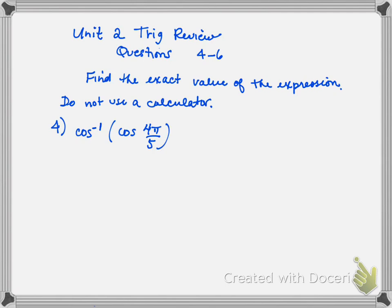You have to check these out and know what the ranges are of the inverse functions. Before I even start, I have to know what the range of inverse cosine is to know where my answer is supposed to be. The inverse cosine function is in quadrant 1 and quadrant 2.